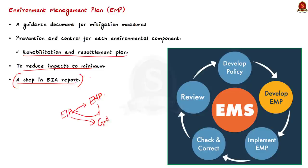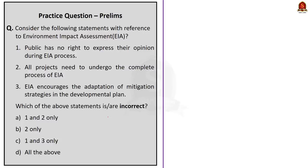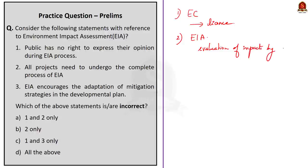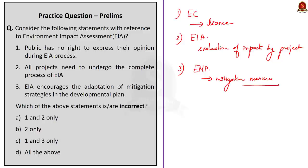To recap: Environmental Clearance is a procedure to get clearance from the government for installation and modification of certain projects. Environmental Impact Assessment evaluates environmental impacts of a proposed project, taking into account socio-economic, cultural and human health impacts — both beneficial and adverse. It also contains a developmental plan for mitigation strategies called the Environment Management Plan — a guidance document for mitigation measures including prevention and control for each environmental component.